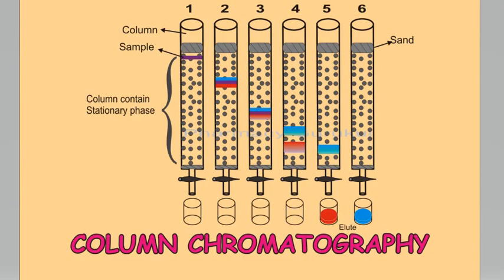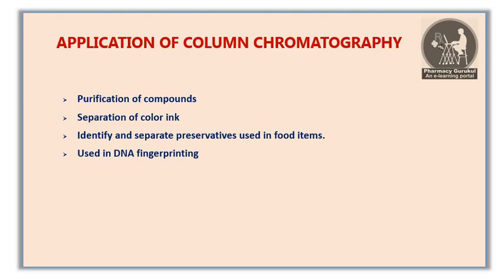In short, the principle of column chromatography is: a sample mixture is placed on the top of the column and made to adsorb onto the top of the stationary phase. The separation of compounds occurs due to the difference in polarity of the molecules.